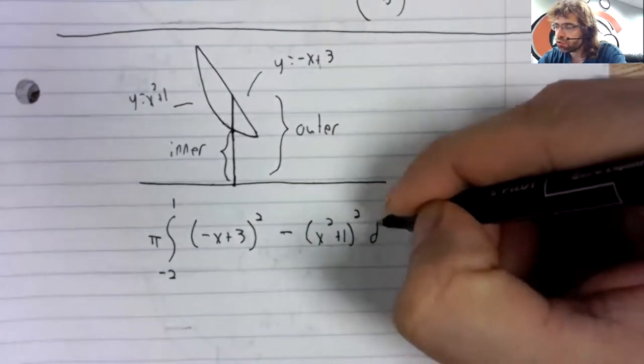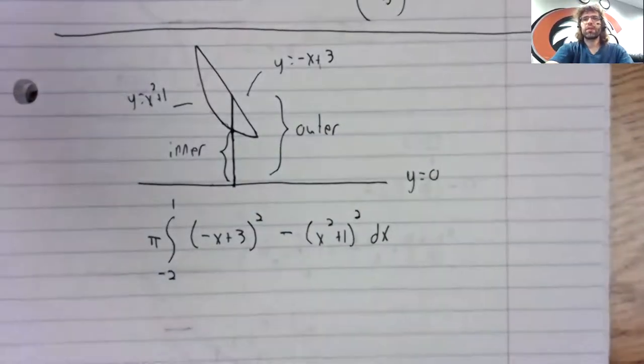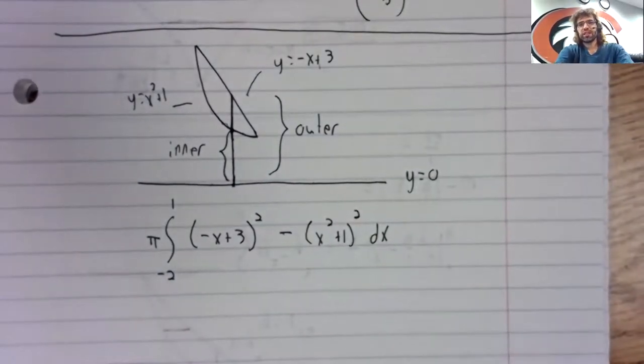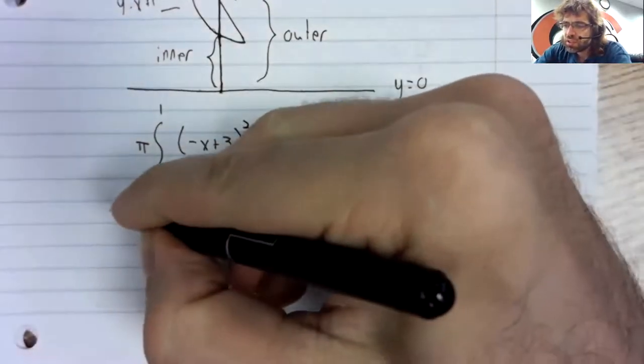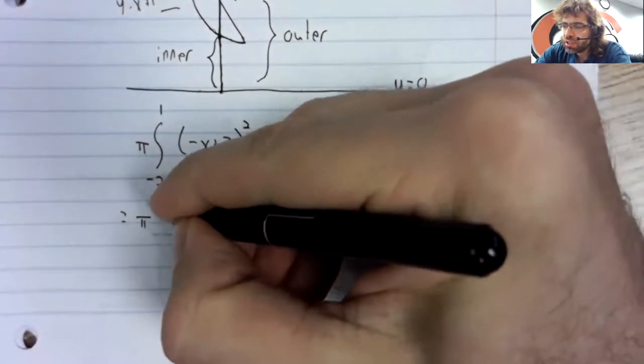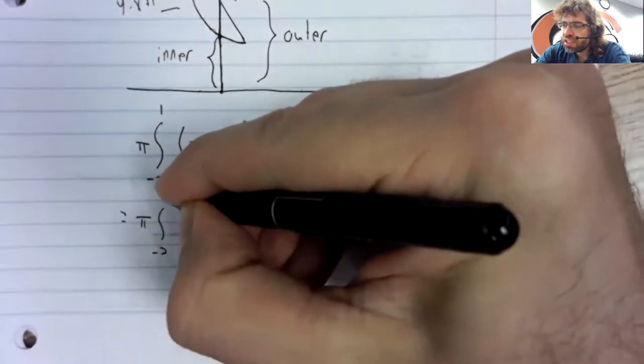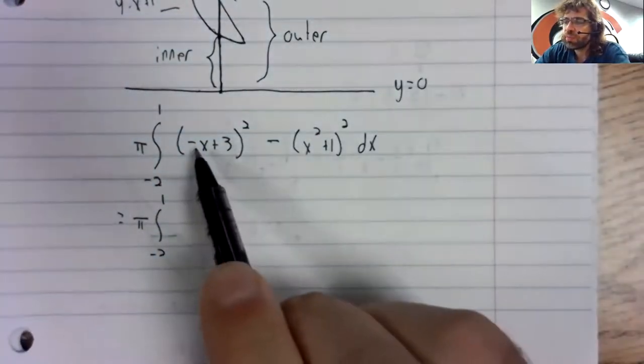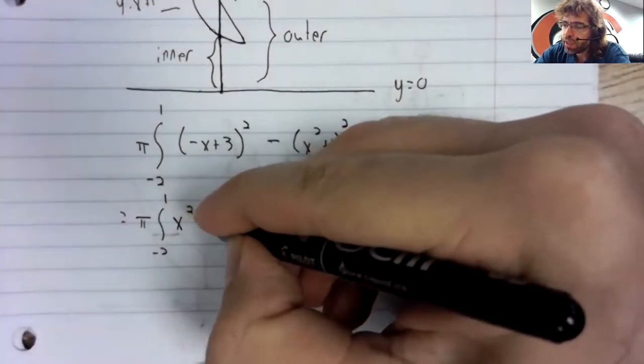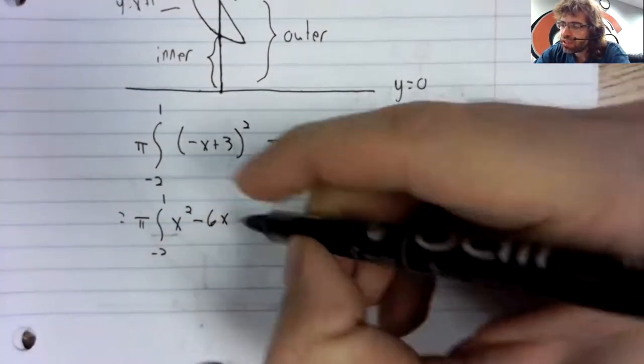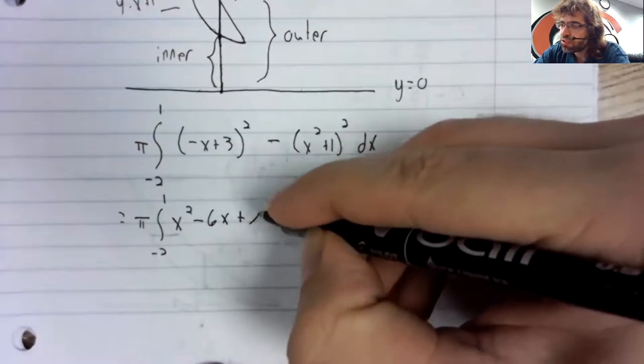The outer radius squared minus the inner radius squared. And this is going to be kind of tedious. But foil this. X squared minus six x plus nine.